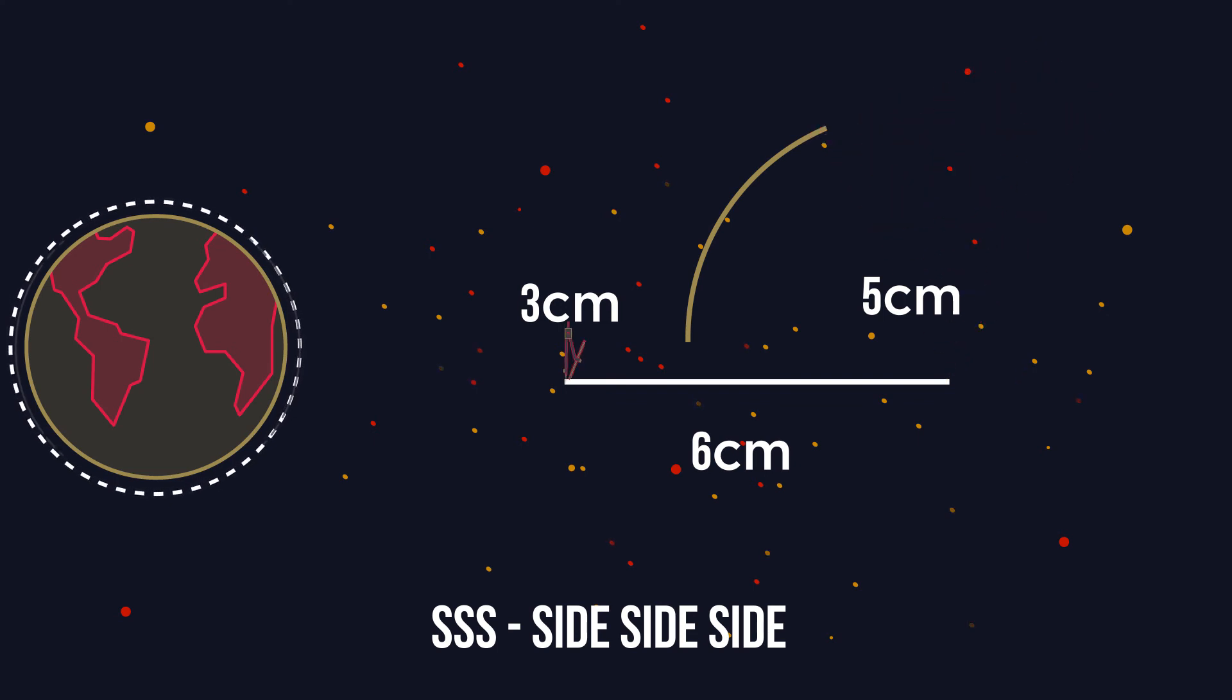Draw an arc from one end of the line. Now measure your compass to 3 centimetres and draw an arc from the other end. Where the two arcs cross is the point of the triangle.